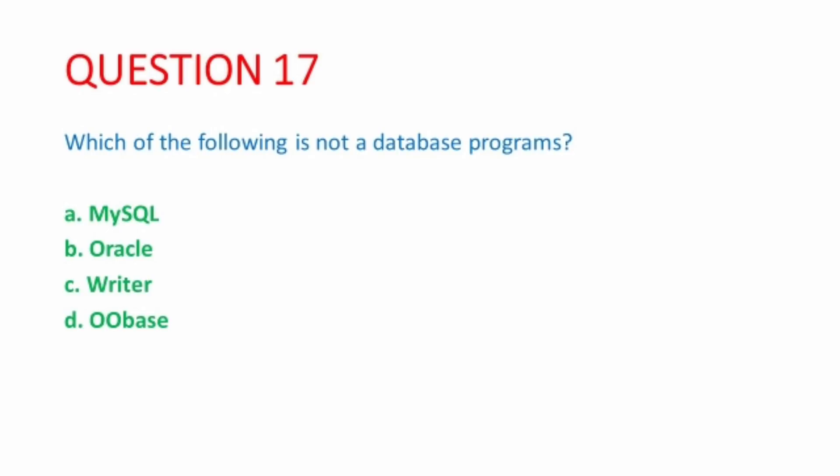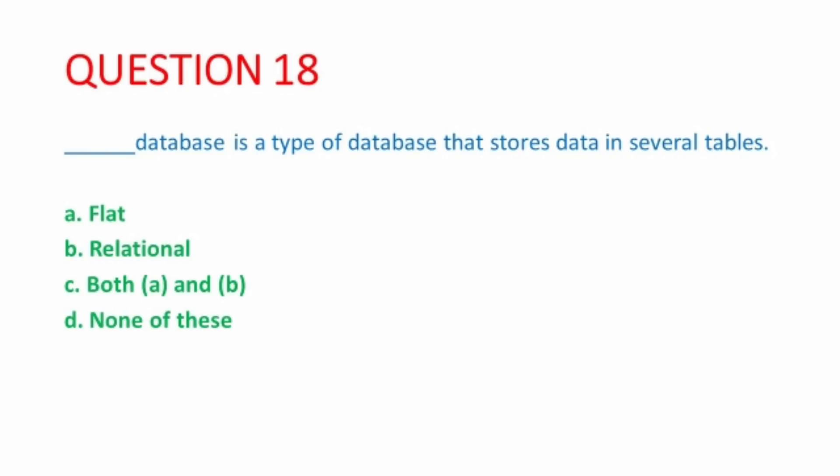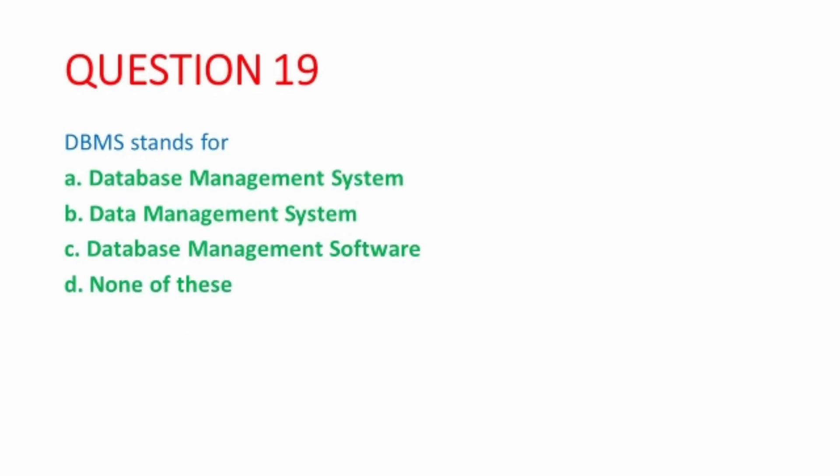Next MCQ, which of the following is not a database program? Writer is a documentation software, so this is the correct option. Next MCQ, relational database is a type of database that stores data in several tables. The correct option is relational database. In relational database, we can store data in several tables and those tables will be linked with each other. Next MCQ, DBMS stands for database management system.